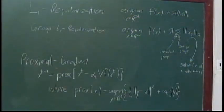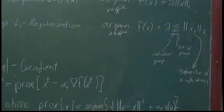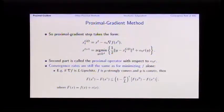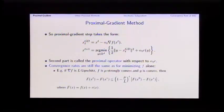The convergence rates are still the same as for minimizing F alone. If the gradient of F is Lipschitz continuous, if F is mu-strongly convex and G is convex, you get the (1 - mu/L) rate where mu/L come from F and not from the simple R. This means I can add L1 to any function and solve it at the same speed as without L1. There are all these non-smooth problems that are just not harder to solve than smooth problems. Adding L1, a probability simplex constraint, or disjoint group L1 leaves the convergence rate unchanged.